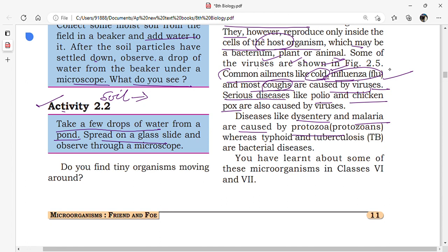Actually, they do not cause any diseases to human beings or other animals. But here, malaria is caused by Plasmodium protozoan and dysentery is caused by Entamoeba histolytica. Whereas typhoid and tuberculosis are caused by bacterial diseases.